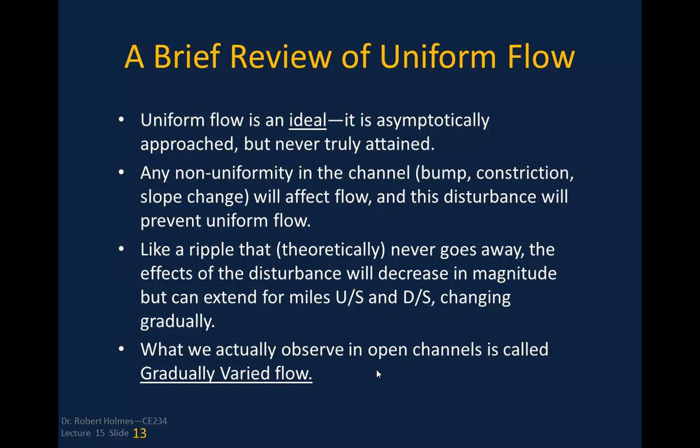Let's talk briefly about uniform flow — remember that it's an ideal. It is asymptotically approached but never truly attained in real flow, because you have to maintain everything exactly perfect: a perfectly uniform channel with no change in roughness. Any non-uniformity — bump, constriction, slope change, roughness change — will affect the flow and prevent uniform flow. Like a ripple that theoretically never goes away, the effects of a disturbance can extend for miles. For example, backwater effects from a high Mississippi River can be felt on the Illinois River over 100 miles upstream. What we actually observe in open channels is gradually varied flow.